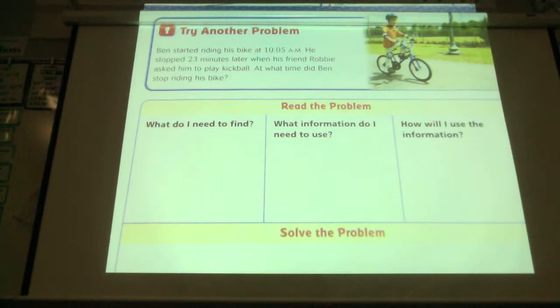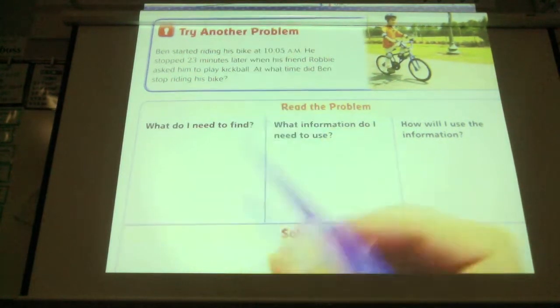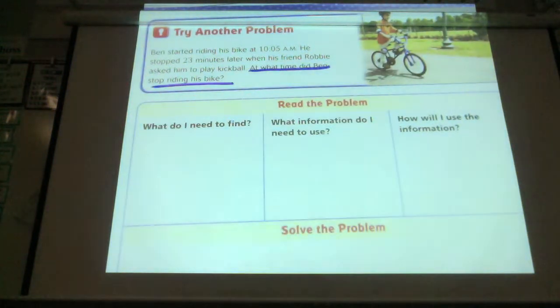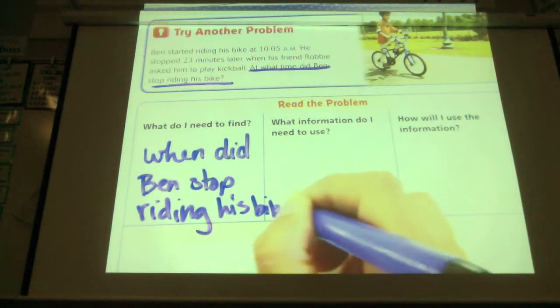Ben started riding his bike at 10:05 a.m. He stopped 23 minutes later when his friend Robbie asked him to play kickball. At what time did he stop riding his bike? What do we need to find out? Okay, you should have underlined at what time did he stop riding his bike?